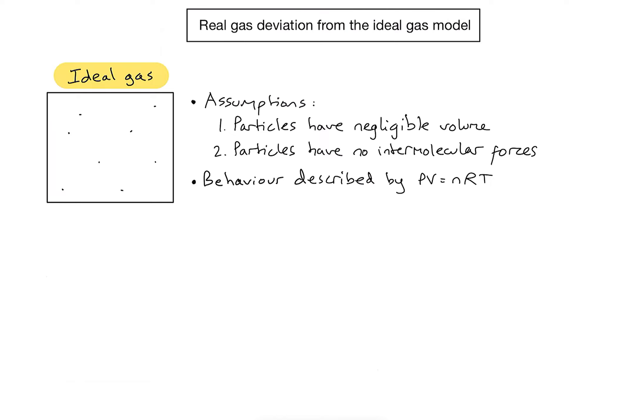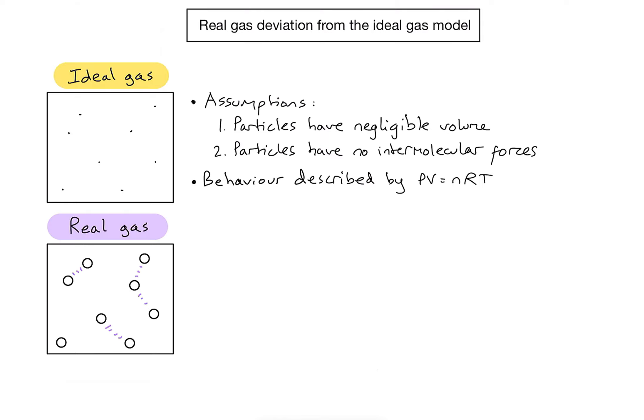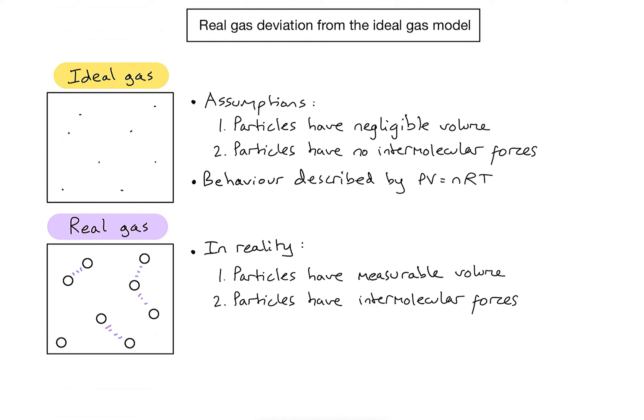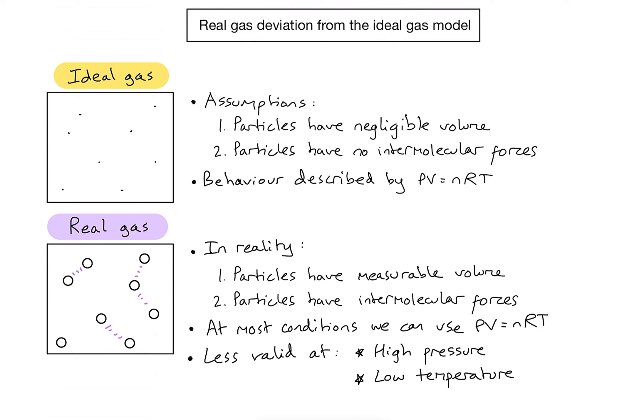In reality, when we are dealing with real gases we can't use these assumptions. In reality, particles do have some measurable volume, as shown in the diagram where the circles are drawn with a larger, measurable volume. They also have intermolecular forces, represented in the diagram by purple dashed lines. Fortunately, at most conditions we can still use the ideal gas equation accurately. However, there are two conditions where it becomes less valid: high pressure and low temperature.